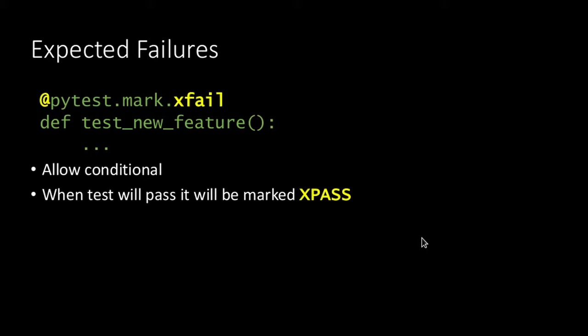Another feature is when we expect something to fail — this could be a to-do, or it could fail because of the operating system or something else. We can mark it XFail. It can be conditional like skip-if, so we can add a flag whether it should fail or not. If it passes anyway, it will be marked as XPass rather than just passed, so we know this test should have failed. We told PyTest it should fail and it actually passed, so we can either remove the flag or handle it.